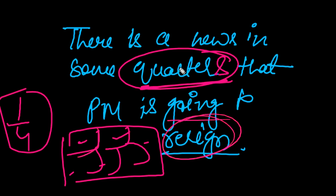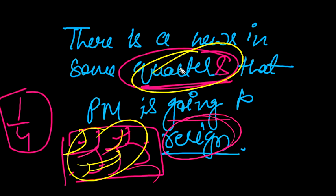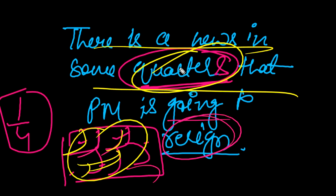For example, 1-2-3 is a quarter, and it is divided into quarters. So, there is a quarter in quarters — meaning multiple. Therefore, the correct sentence is: there is news in some quarters that PM is going to resign.